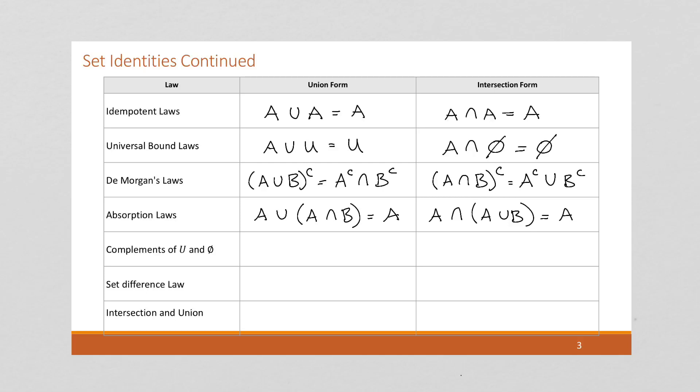Complements of the universal set and the empty set. If we take the universal set and we take the opposite of it, the complement, we're going to get nothing left. And similarly, if we have nothing and we take its complement, which is synonymous with negation, we're going to have everything left.